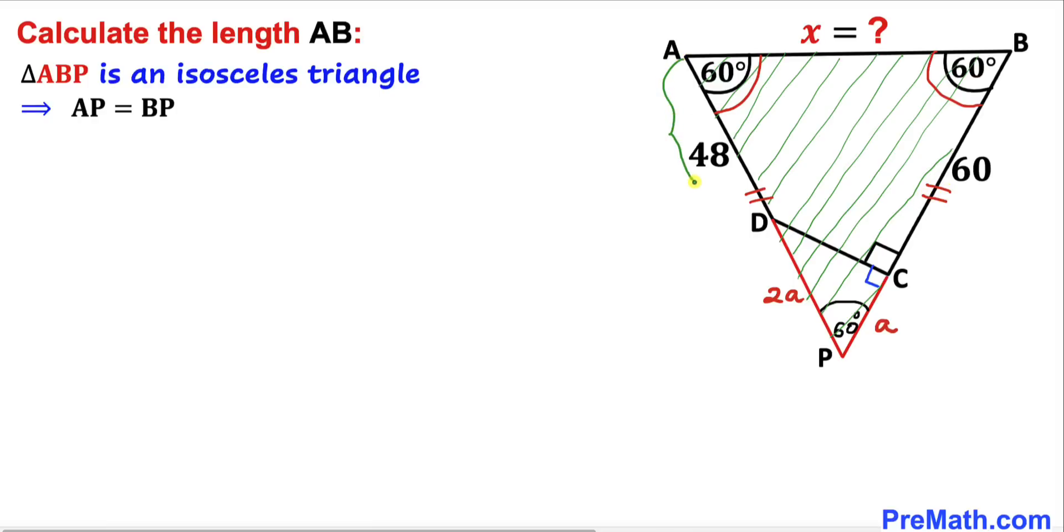We know side length AD is 48 units and side length DP is 2a, so the total side length AP is 48 + 2a. Likewise, side length BC is 60